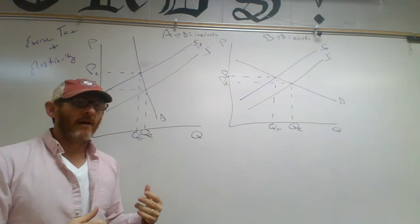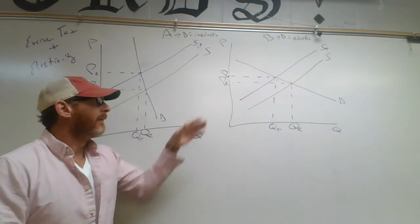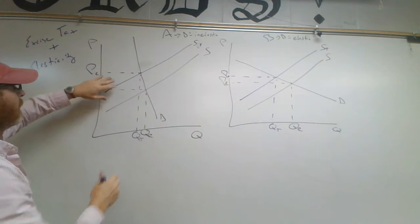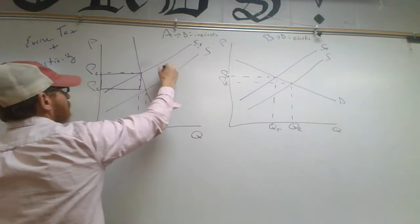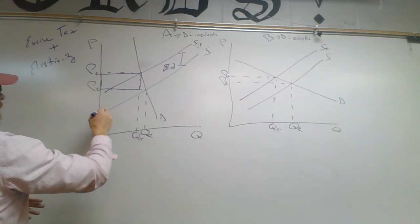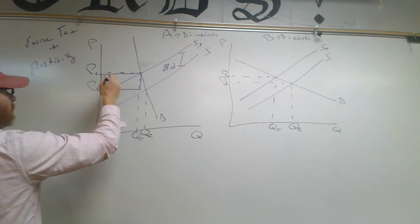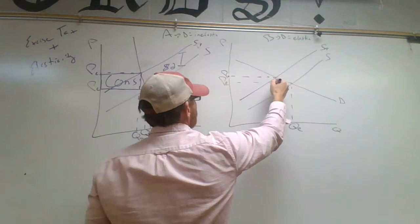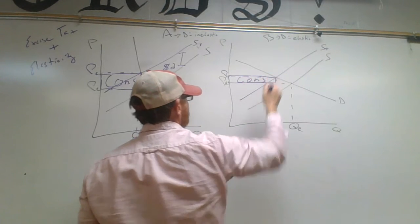Prices have less of an effect on quantity demanded in a more inelastic curve than on a more elastic curve. So this entire area — we'll say this is a $2 tax between here and here — this entire area is what the consumers are taking on. This is the consumer portion of the tax. And here on Graph B, this is also the consumer portion of the tax.